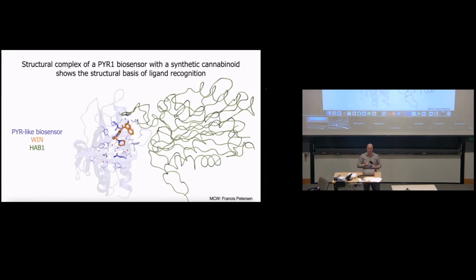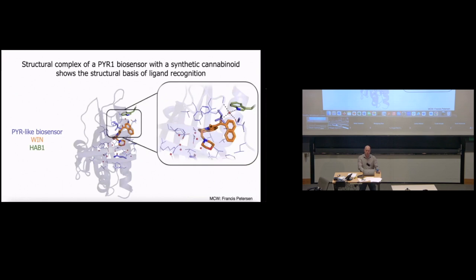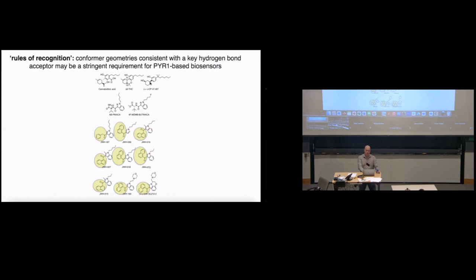Francis Peterson solved the structure for us of one of these biosensors. We found a structural basis of ligand recognition where this win is in orange here. There's this little dot in red, and that's a water molecule. What's really interesting about this is that this water molecule really ties the room together, ties the sensor complex together by forming two hydrogen bond donors and two acceptors, where one of the hydrogen bond acceptors is from that ligand itself. If you start looking at some of these things that we're able to bind, that hydrogen bond acceptor at prominent locations I'm showing in yellow here pops out all over the place. What we think is that conformers of these ligands, the three-dimensional conformation that ligand can hold, it's got to put that hydrogen bond acceptor in a certain location for a biosensor to form.